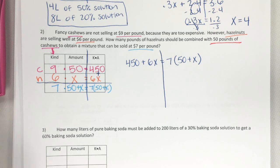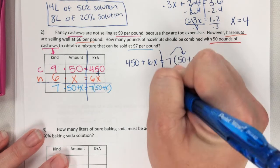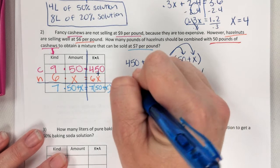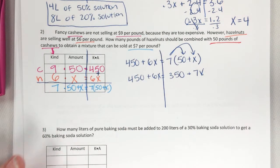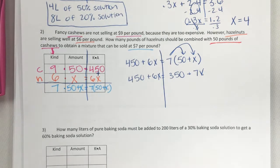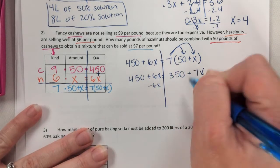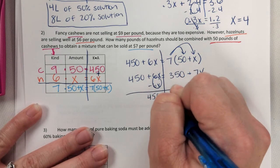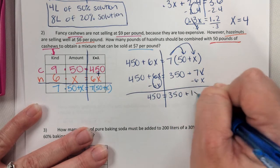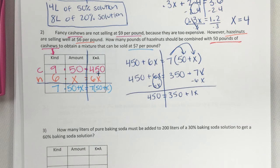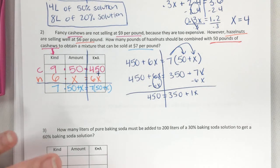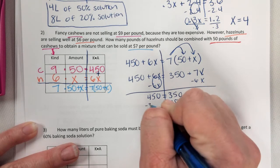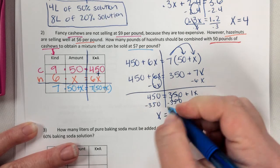What do I do? Distribute. What's 7 times 50? 350. 7 times X? 7X. I'll bring down what I haven't moved over here. And I always like to move my smallest variable first. Which one is that? 6X. So minus 6X minus 6X. And that leaves me with 450 equals 350 plus 1X. Or could I just write plus X? Yeah, you don't have to put the 1 in front. And what's my last step? Subtract 350. And I get X equals what? 100.